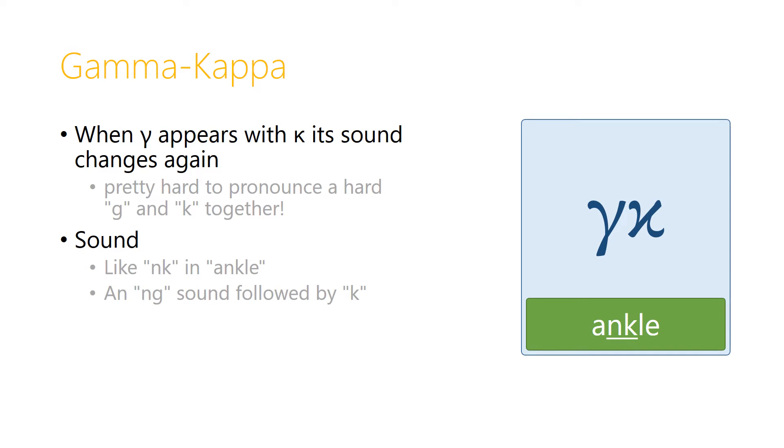Another combination that changes the sound of gamma is gamma with a kappa after it. Now it's pretty hard to pronounce a hard G and K together, isn't it? And so the Greeks too would change the sound of the gamma to more an NG sound, like the N and K in ankle.